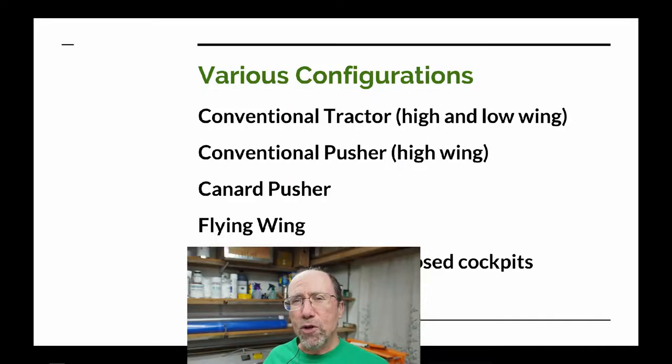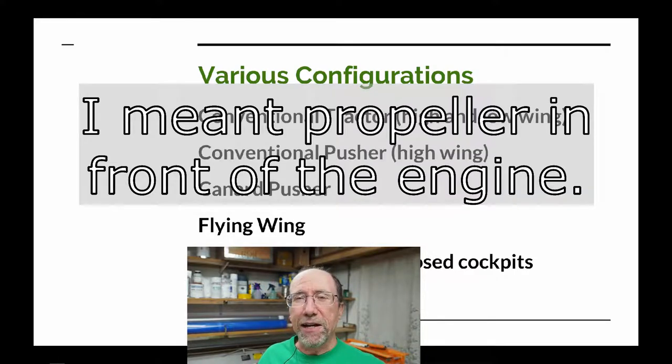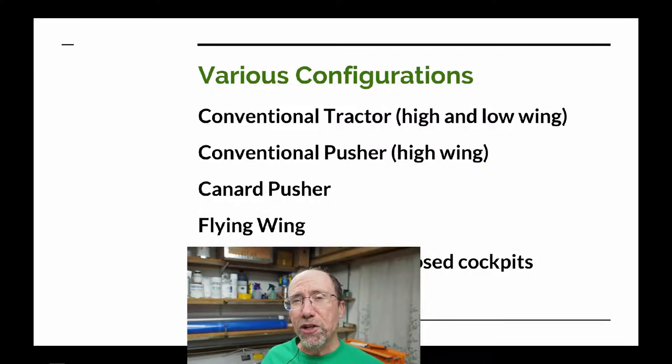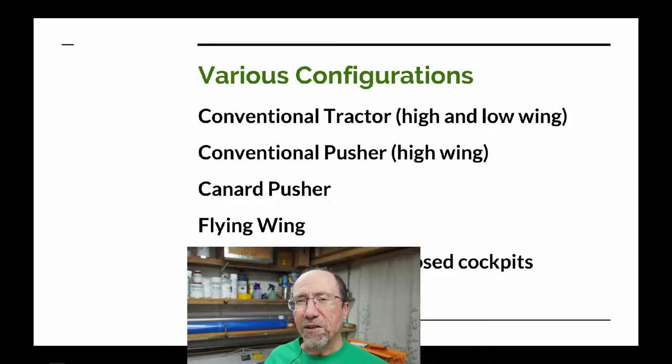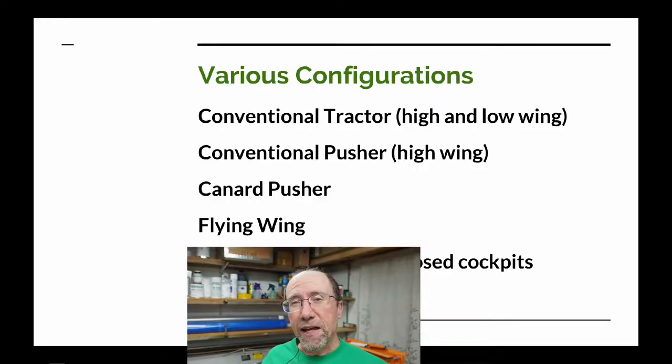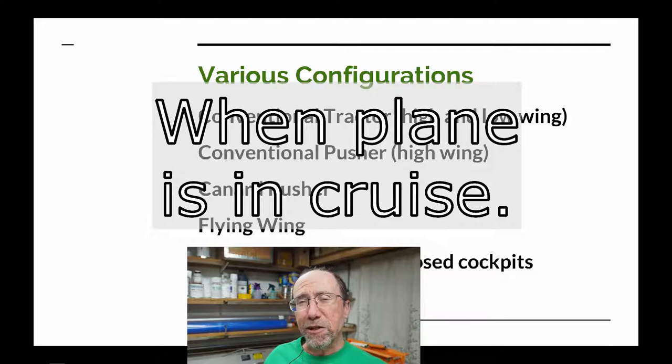There are a number of configurations we need to consider for our aircraft, and we can use a lot of existing configurations. One of the more conventional is the tractor configuration — with high wing or low wing — where the engine is in front pulling the airplane. There's also a conventional pusher, common on ultralights, where the engine is pushing instead of pulling. Another consideration is the canard configuration, where the elevator is in front of the main wing doing lift rather than pushing down. There are very few canard tractor configurations, so we'll only consider the canard pusher.